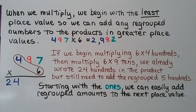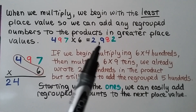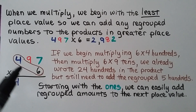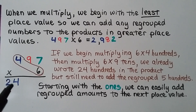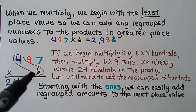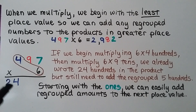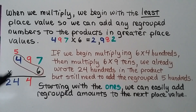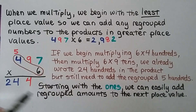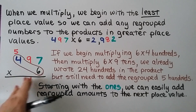When we multiply, we begin with the least place value so we can add any regrouped numbers to the products in greater place values. We saw that 497 times six equals 2,982. If we had started with the greatest place value, we'd have six times four hundreds equaling 24 hundreds, not 29 hundreds. When we went to multiply six times nine tens, we already wrote 24 here but still needed to add the regrouped five hundreds — we can't, because we already wrote 24. We would have to erase. So starting with the ones, we can easily add regrouped amounts to the next place value.